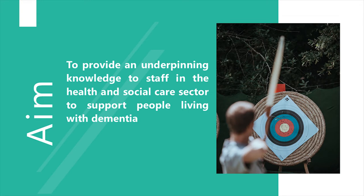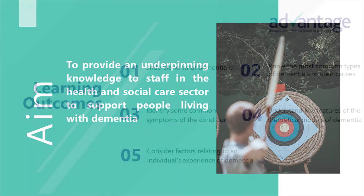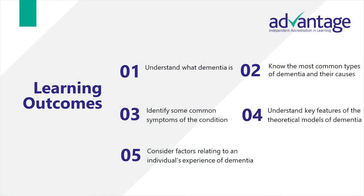Today our aim is simple: to provide an underpinning knowledge for you as informal carers who support people living with dementia. We also like to be clear about the learning objectives in our webinars. We want to make sure that you know what to expect. For this webinar we have five basic learning outcomes.